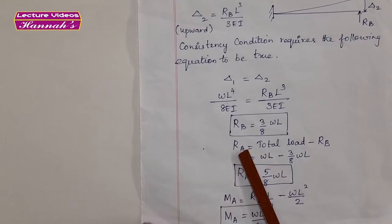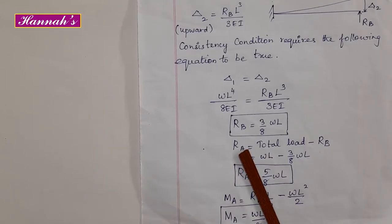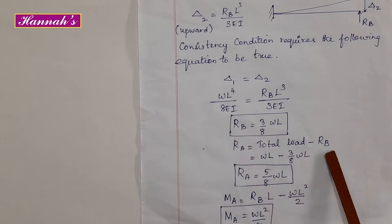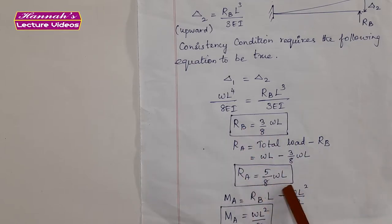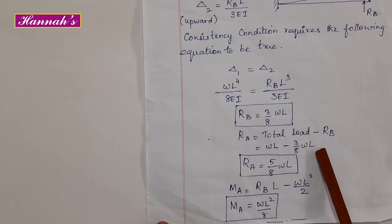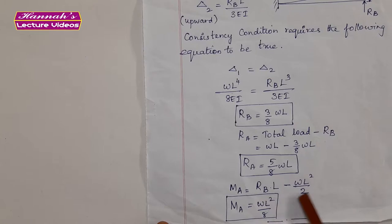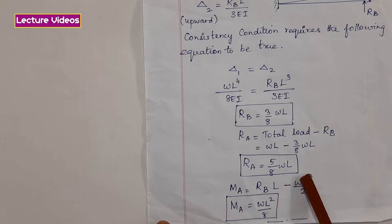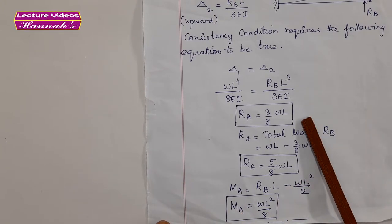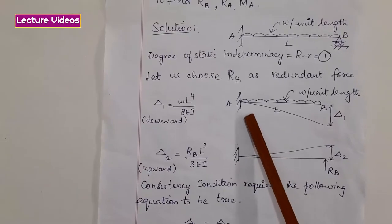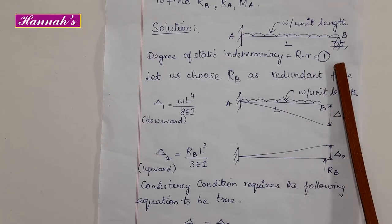By the equation of statics, sigma V equal to 0, RA equals total load minus RB. Then, with the help of RB and the total load, taking moments we get the value of MA. So the reaction components MA, RA, and RB are all determined — these are the unknown support forces for this propped cantilever beam.